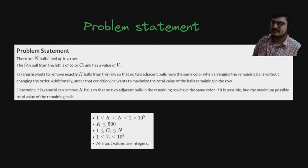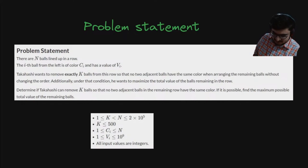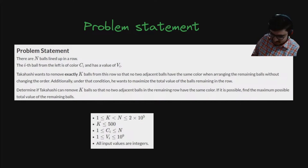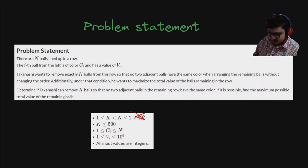Let's get started. The problem statement says: there are N balls lined up in a row. The i-th ball from the left is of color c_i and has value v_i. The customer wants to remove exactly K balls from this row so that no two adjacent balls have the same color when arranging the remaining balls without changing the order. Additionally, under that condition, we want to maximize the total value of balls remaining.